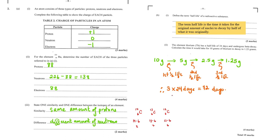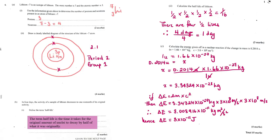Lithium-7 is an isotope of lithium: mass number = 7, atomic number = 3. Determine the number of protons and neutrons. The atomic number is the number of protons = 3; neutrons = 7 − 3 = 4. Draw a clearly labelled diagram of lithium-7: place the nucleus in the center, write the symbol showing 3 protons and 4 neutrons, then draw the first energy level. The first energy level holds a maximum of 2 electrons.